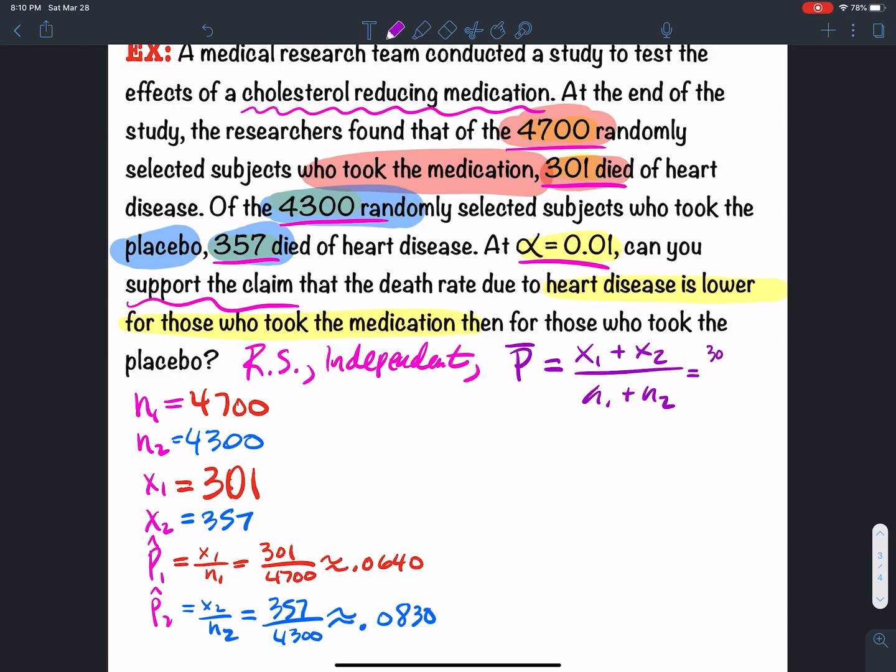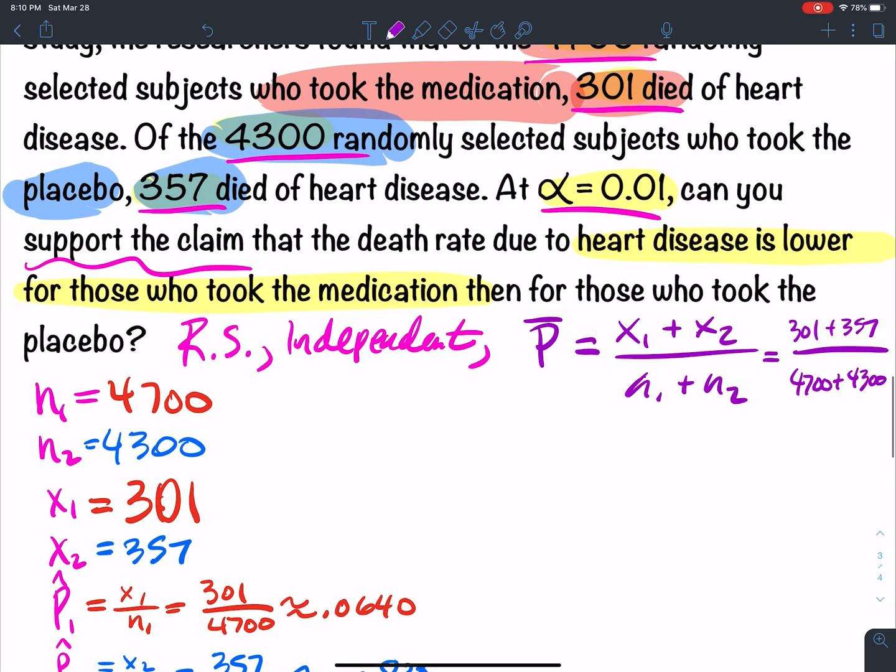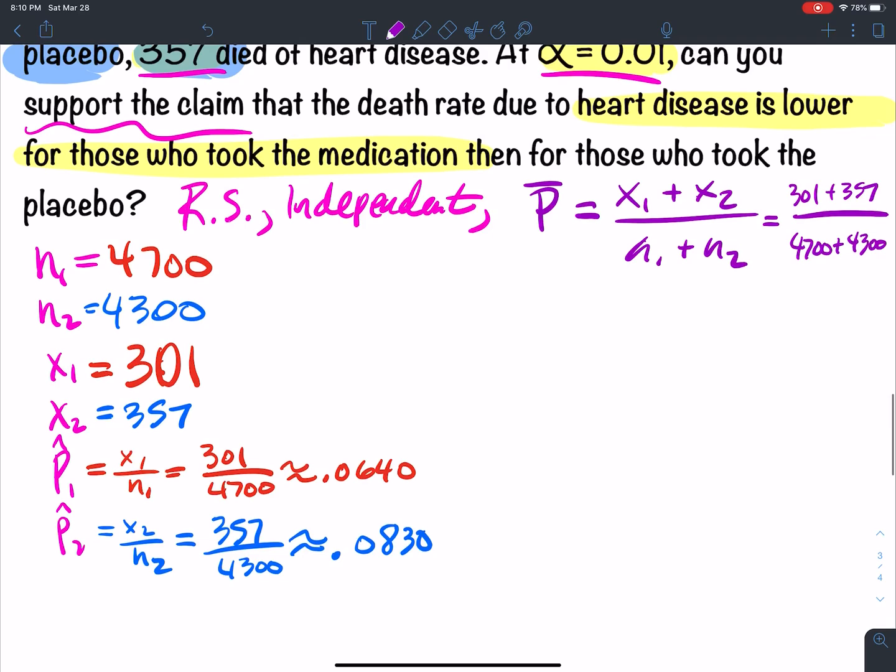So what is that? That's going to be 301 plus 357 over 4,700 plus 4,300. When I type that in my calculator, I'm going to get 0.0731.